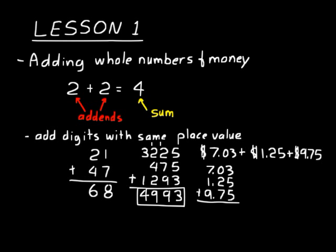Let's add just like we did in the previous problem. 3 plus 5 is 8, plus 5 is 13. Carry 1. 1 plus 0 is 1, plus 2 is 3, plus 7 is 10. We have 0, carry 1. 7 plus 1 is 8, plus 1 is 9, plus 9 is 18. Our answer is 18.03, and we can put a dollar sign: $18.03.